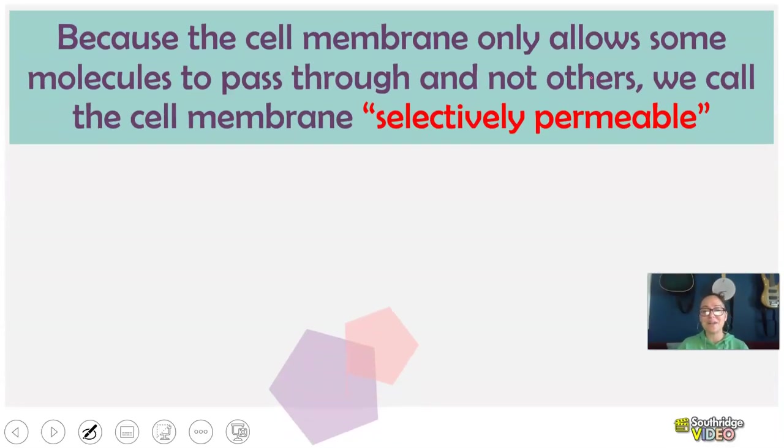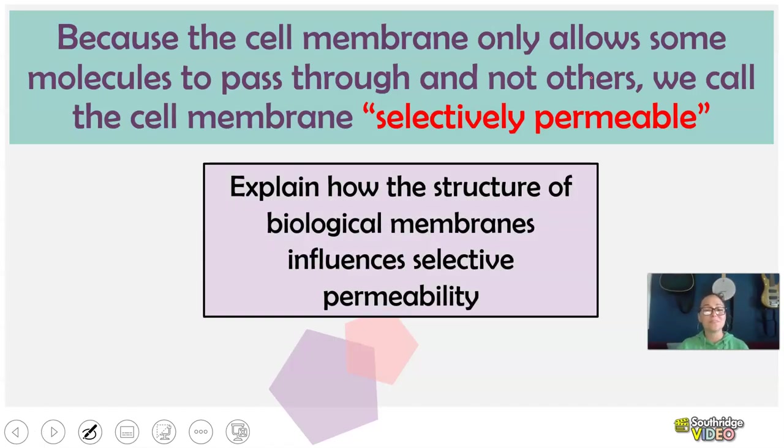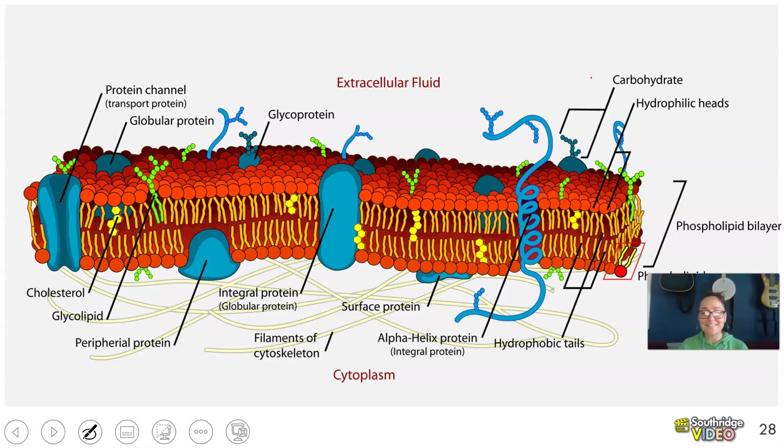And so because the cell membrane only allows some molecules to enter or to pass through and not others, we call this cell membrane selectively permeable.